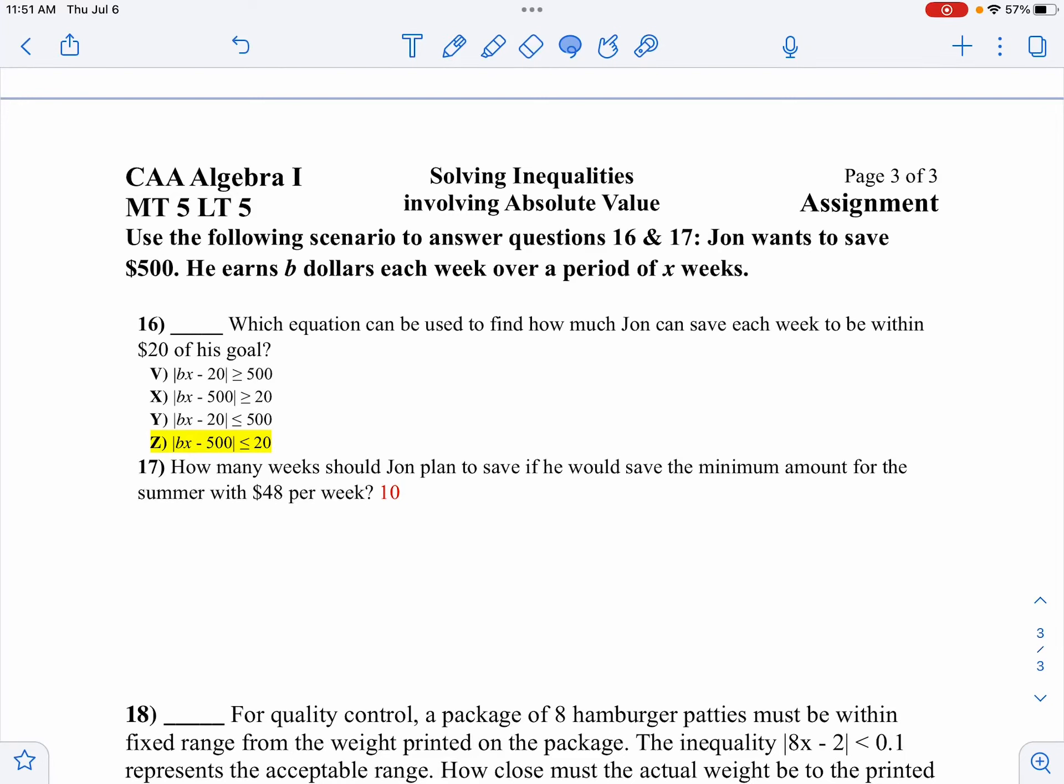Let's take a look at questions 16 and 17. We want to use the following scenario. John wants to save $500, and he earns B dollars each week for a period of X weeks. Which equation would we use to find how much he can save to be within $20 of his goal?